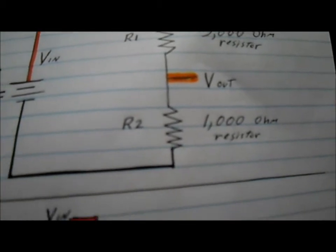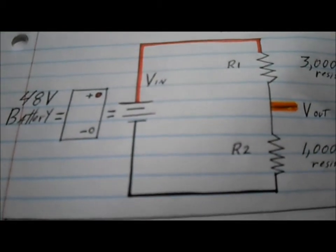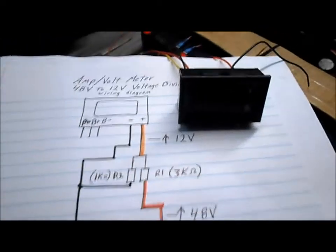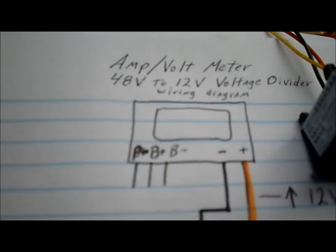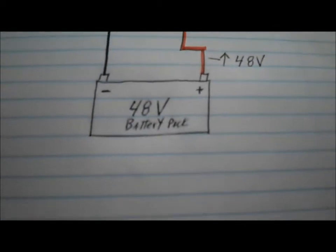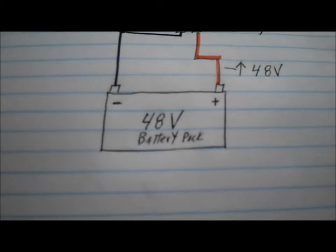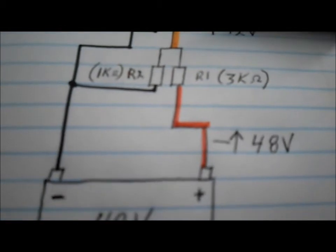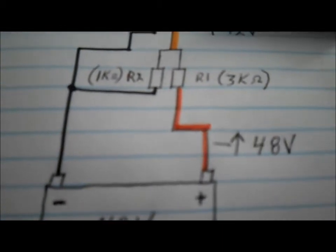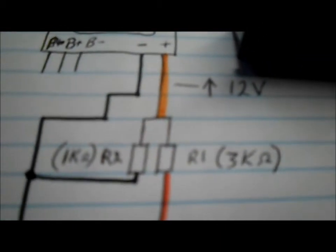This is the type of meter we're going to be hooking up. So we got our 48-volt battery pack. Our red volt-in wire goes to our 3000-ohm resistor.